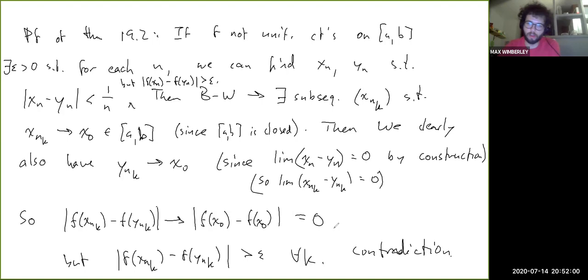It all worked out exactly as we expected. If we thought we could find pairs of points where the values of f are consistently at least epsilon apart from each other, but these pairs of points in the domain keep getting closer and closer, then they end up clustering around this point x0. And then if you look at x0 and say, well, f is supposed to be continuous there, then you run into problems.